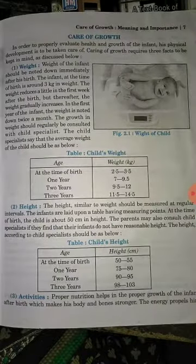This is the proper weight range. If you feel there is any type of problem in the child's weight, check regularly and consult a good child specialist. The second point is height — similar to weight, height should also be measured at regular intervals. Again, there is a chart here. At the time of birth, height is 50 to 55 cm. At 1 year it is 75 to 80 cm. At 2 years it is 90 to 95 cm. At 3 years the child reaches around one meter.